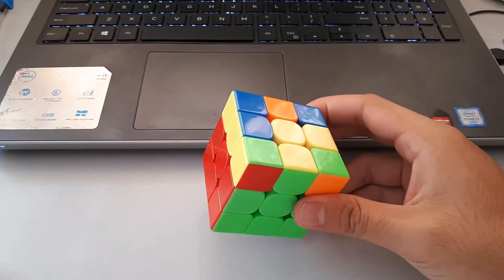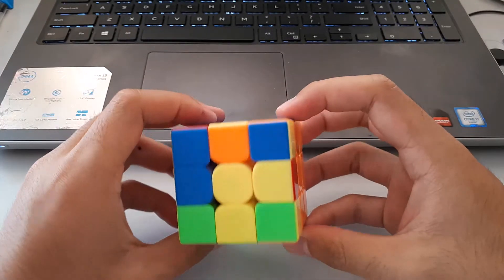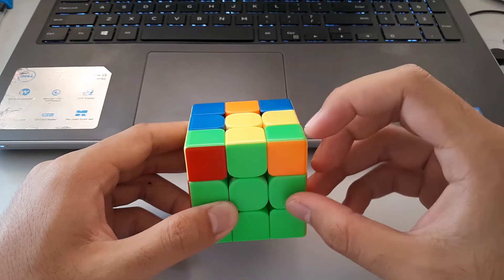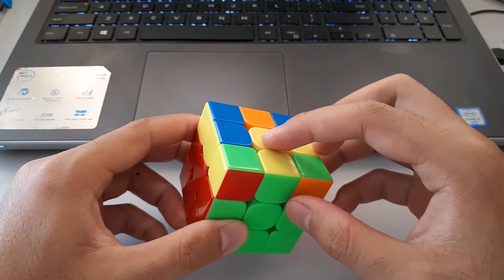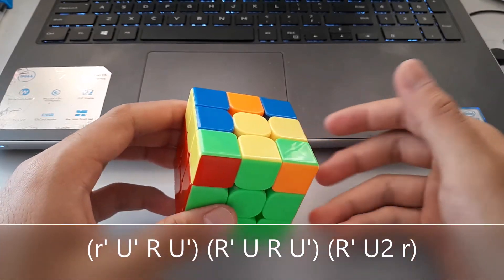So for this L case, once again, we want to hold the 3x1 bar always to the left. And we want to see where the L shape is sitting. So this time it's sitting near the front, which actually means we want to do the algorithm so it deals with the back part of the cube. So the algorithm goes like this.